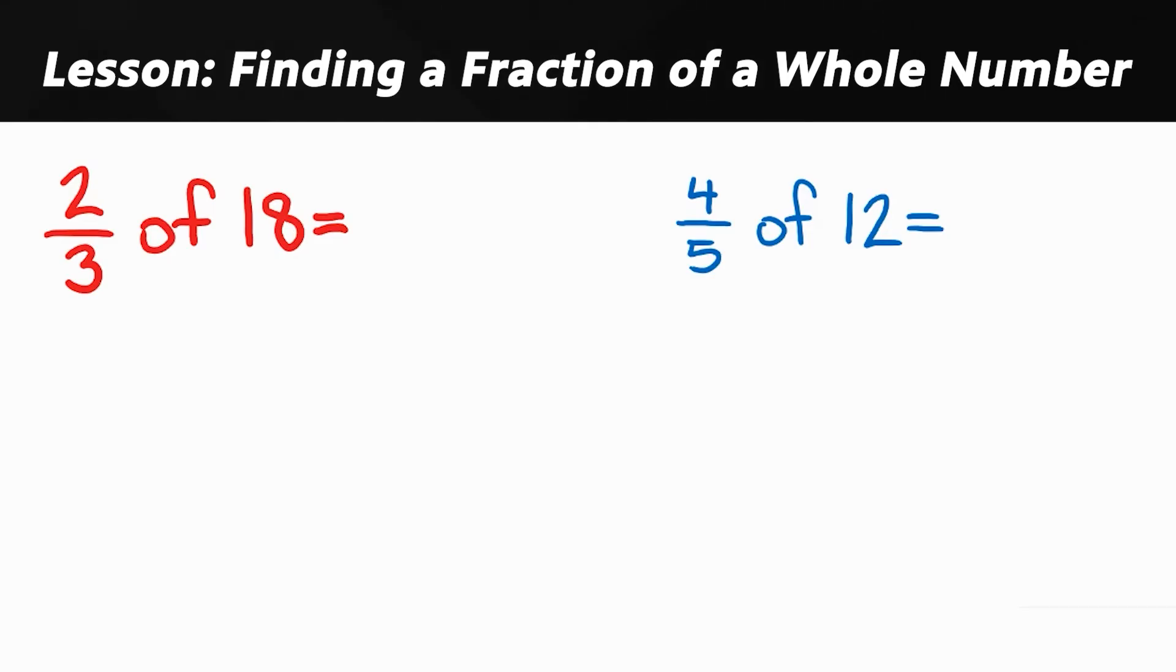Two thirds of 18. Start with the denominator. 3 times what gets me to 18? 6. Now just like we saw earlier whatever I do to the bottom I've got to do to the top. So if it's times 6 at the bottom it'll be times 6 at the top. So what's 2 times 6? 12 of course. And that's the answer. Two thirds of 18 is 12.